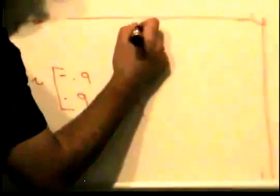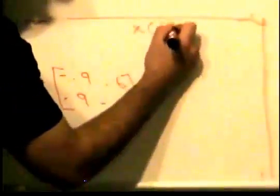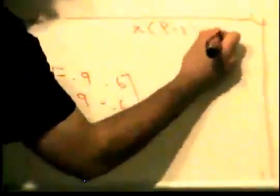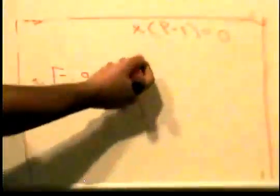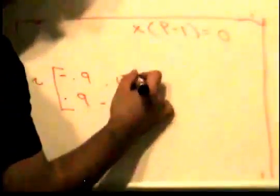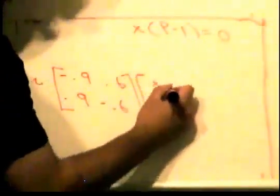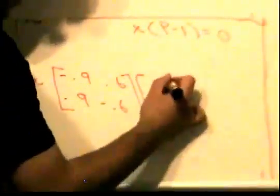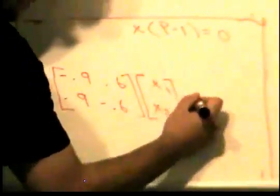The equation was (P - I)x = 0, which is a homogeneous equation. If I write this out with x1 and x2, this equals [0, 0].